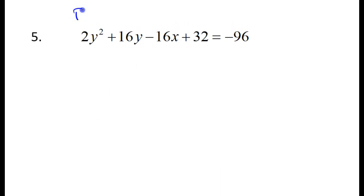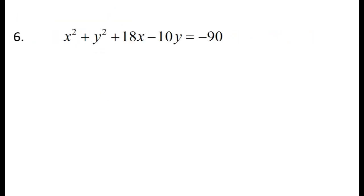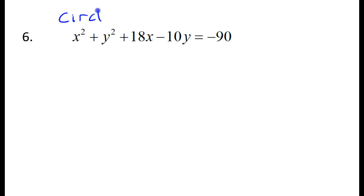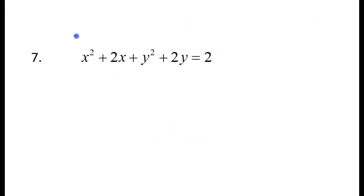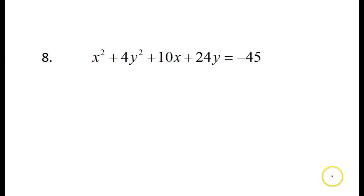Number 5 is another parabola. Number 6 is another circle because I have two variables squared and the coefficients are the same — they're both 1. Number 7 is another circle for the same reason. Number 8 is another ellipse: I have two variables squared, they're both positive, the coefficients are different — a coefficient of 1 and a coefficient of 4. Since they're not the same, it's an ellipse.